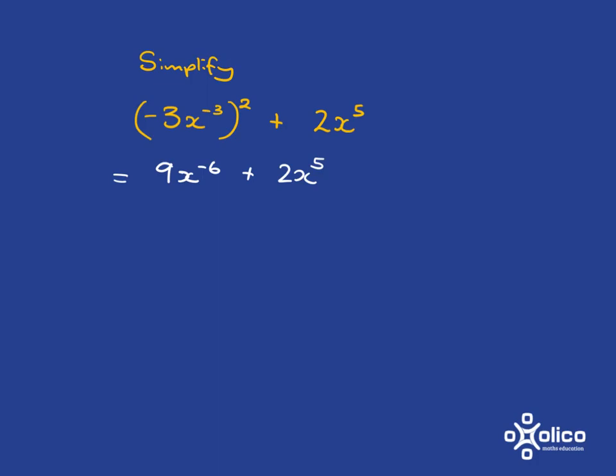And here we've got x to the negative 6, x to the 5. So this and this are not like terms, so we can't do anything further. This is as far as we can go. We cannot add them, because we can only add when we have like terms.